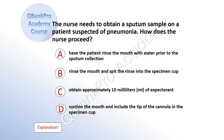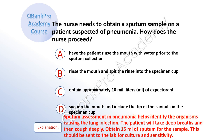The nurse needs to obtain a sputum sample on a patient suspected of pneumonia. How does the nurse proceed? A, have the patient rinse the mouth with water prior to the sputum collection. B, rinse the mouth and spit the rinse into the specimen cup. C, obtain approximately 10 milliliters of expectorant. D, suction the mouth and include the tip of the cannula in the specimen cup. The correct answer is A, have the patient rinse the mouth with water prior to sputum collection. Explanation: Sputum assessment in pneumonia helps identify the organisms causing the lung infection. The patient will take deep breaths and then cough deeply. Obtain 15 milliliters of sputum for the sample, which should be sent to the lab for culture and sensitivity.